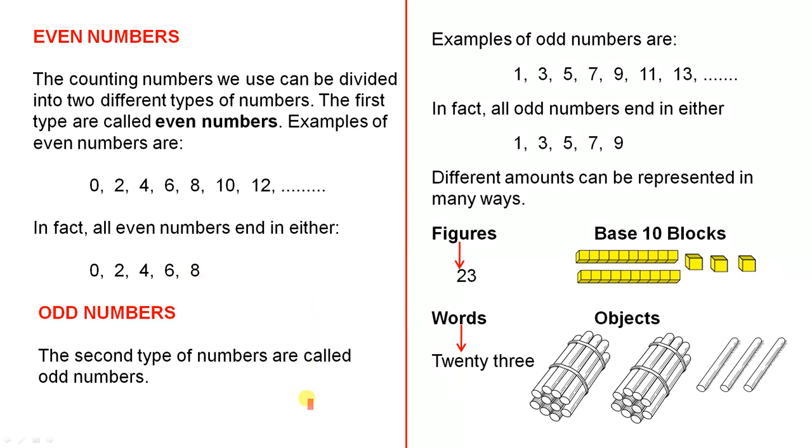Odd numbers. The second type of numbers are called odd numbers. Examples of odd numbers are 1, 3, 5, 7, 9, 11, 13, etc. In fact, all odd numbers end in either 1, 3, 5, 7, or 9. So you've just got those five digits there, and no matter how large the number is, if it ends in one of these, it is an odd number.